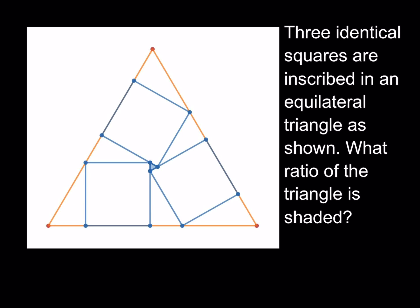Three identical squares are inscribed in an equilateral triangle as shown. What ratio of the triangle is shaded? So there's something funny about this. Which triangle are we talking about? If I'm talking about the little mini shaded blue triangle in the middle, then 100% of the triangle is obviously shaded, correct? But of course, I'm not talking about that. I'm talking about the big one.